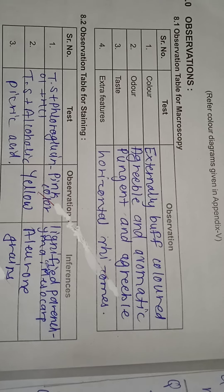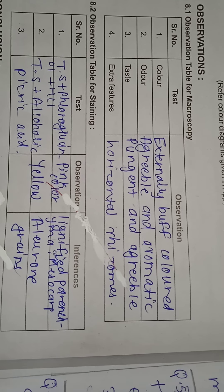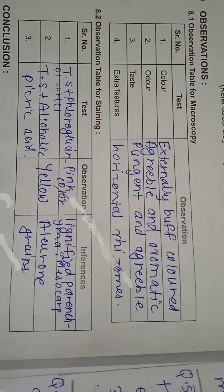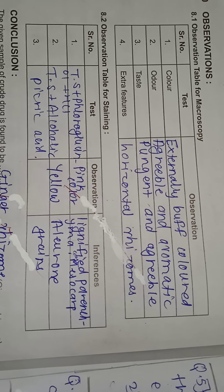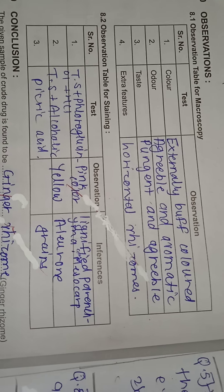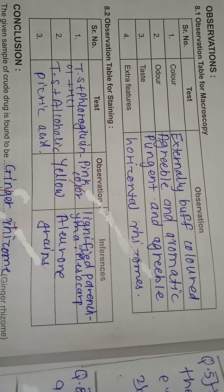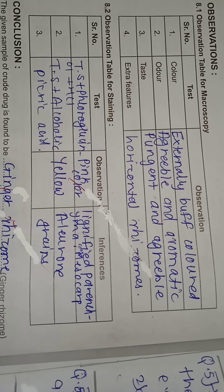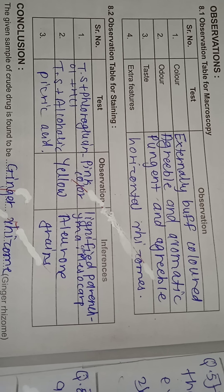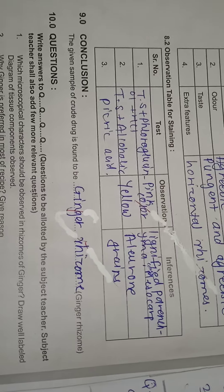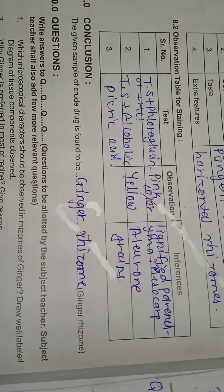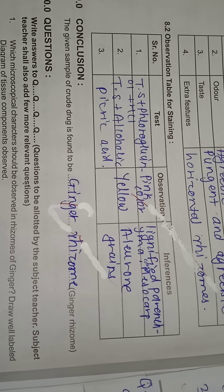Here is the observation table for macroscopy covering color, odor, taste, size, and shape. The staining agent observation table shows: fluoroglucinol plus HCl gives pink color to lignified parenchyma cells; alcoholic picric acid gives yellow color to aleurone grains. The conclusion is that the given sample of the crude drug is found to be ginger rhizome.